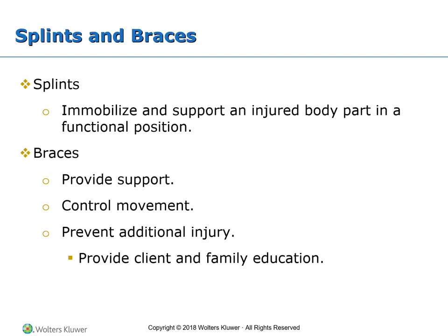A splint immobilizes and supports an injured body part in a functional position. The client would use a splint when a musculoskeletal condition does not require rigid immobilization or causes a large degree of swelling, but requires special skin treatment. Splints can be made of plaster or a more pliable thermoplastic material. They should be padded so that they do not cause pressure, skin abrasions, or breakdown. The healthcare professional fits the client with the splint and then overwraps it with an elastic bandage applied in a spiral mode to promote circulation and maintain the position of the splint.